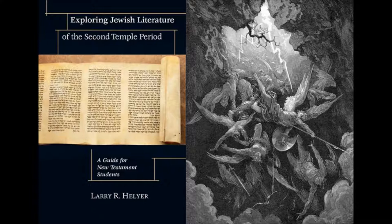So the non-biblical stuff from Qumran, among the Dead Sea Scrolls, would be included in Second Temple literature, and it's available in translation in English. Another example would be Philo — the works of Philo. He would be in the first century AD, a very famous Jewish writer known for allegorical interpretation, trying to reconcile the Hebrew Bible with secular pagan Greek thinking and material. He adopted the allegorical method to do that — to marry the two.